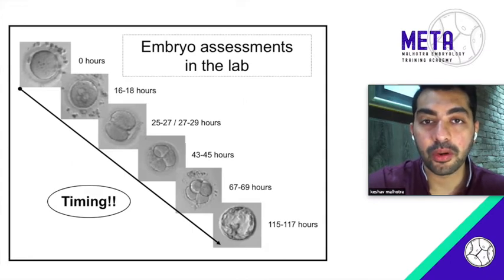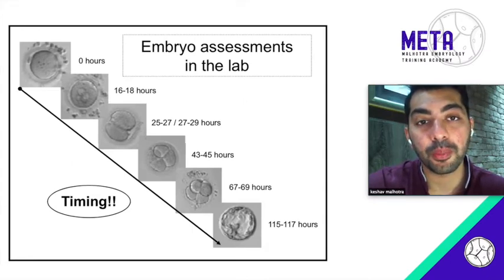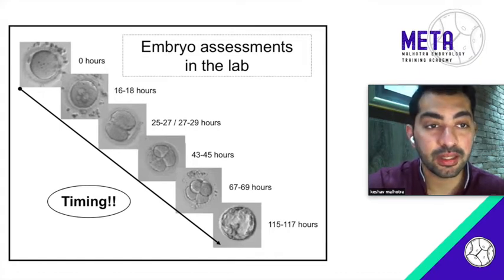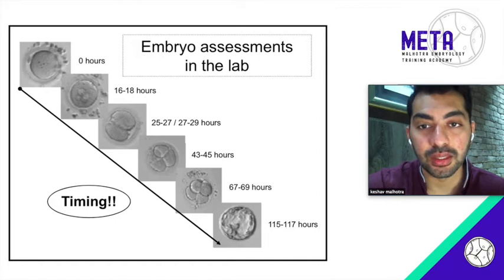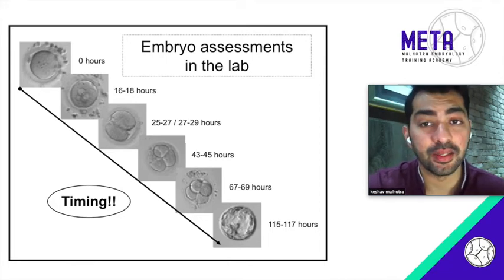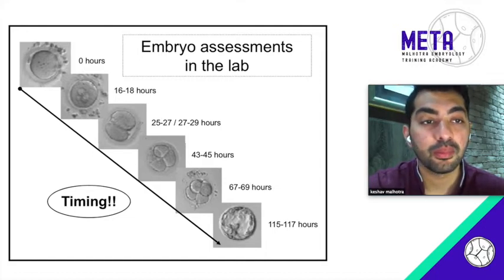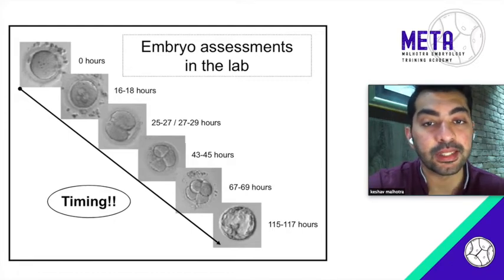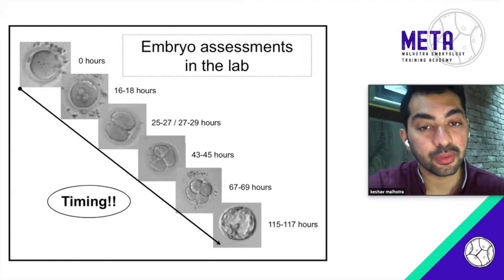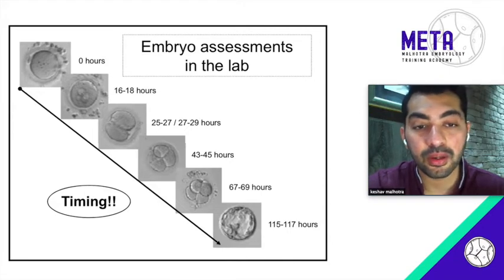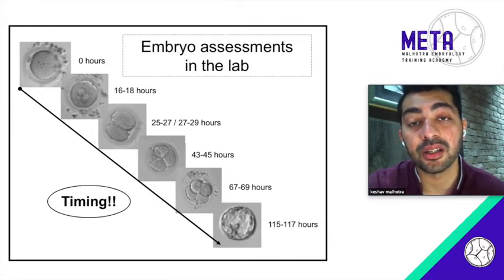The first important thing is knowing the proper timeline of embryo development. The point of insemination is stated as zero hours. At 16 to 18 hours post-insemination you will start seeing the pronucleus — the best time to assess pronuclear morphology and nucleolar size. Around 25 to 27 hours you will see the two-cell stage, 43 to 45 hours the four-cell stage, 67 to 69 hours the eight-cell stage, 90 hours the morula, and around 115 to 117 hours an expanded blastocyst.